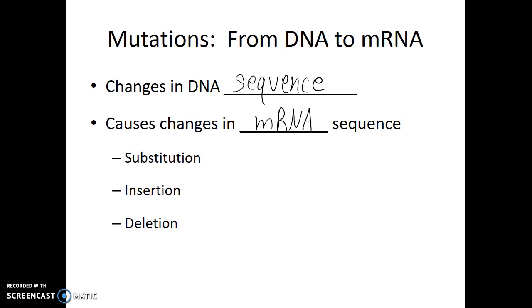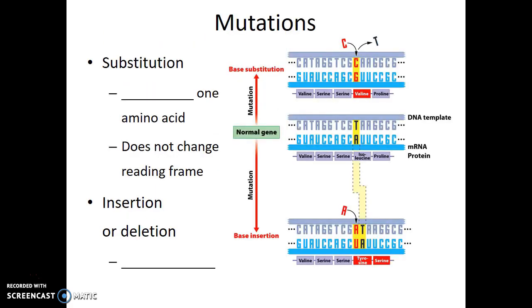What we're going to see is that these different types of mutations can have different impacts on the protein as a result. A substitution mutation results when one letter is changed for another. At most, this substitution mutation changes one amino acid within the protein. It does not change the reading frame or the grouping which we use to identify the codons. Substitution mutations are less likely to have a negative detrimental impact like we would see with an insertion or a deletion mutation.